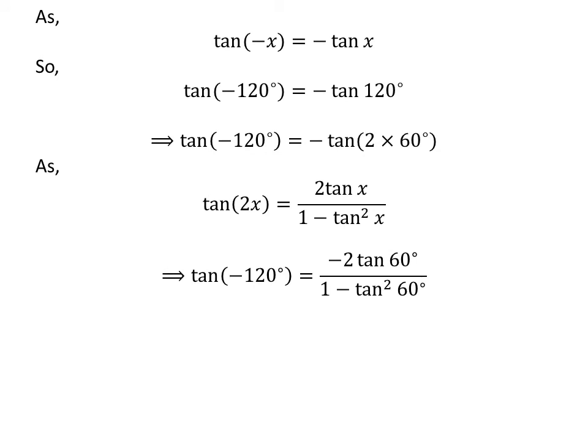Let us apply the above identity for tangent of minus 120 degrees. Here, x is 60 degrees. So, tangent of minus 120 degrees is equal to minus 2 times tangent of 60 degrees upon 1 minus square of tangent of 60 degrees.